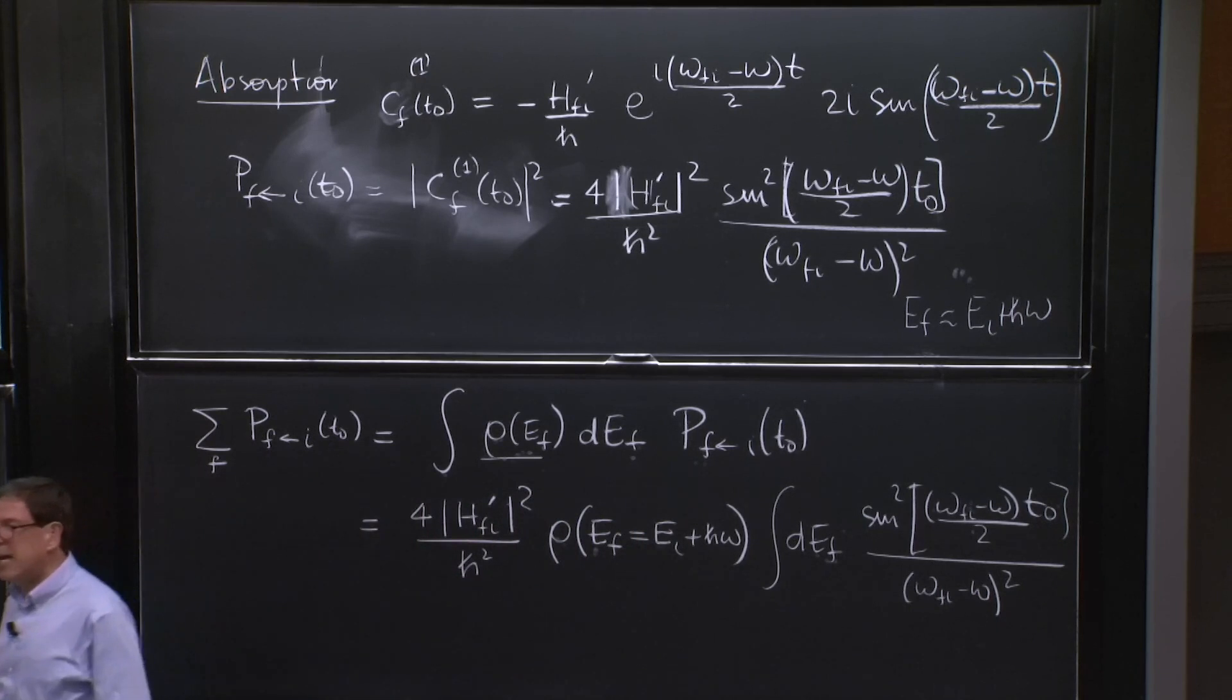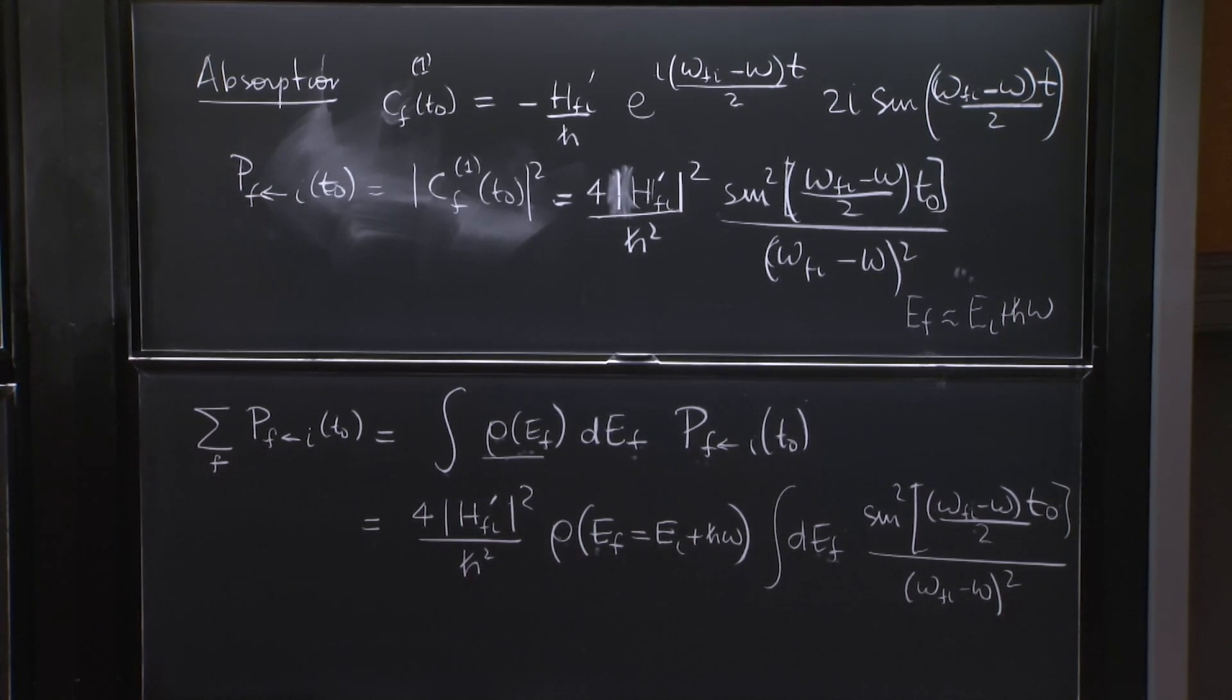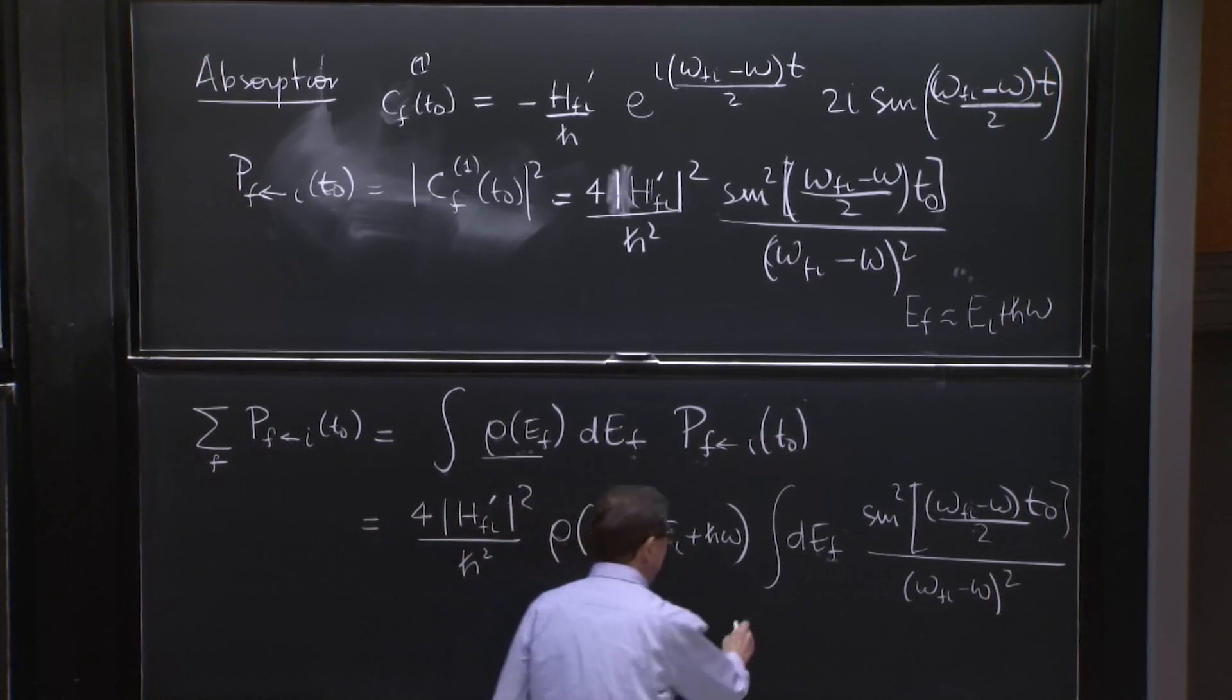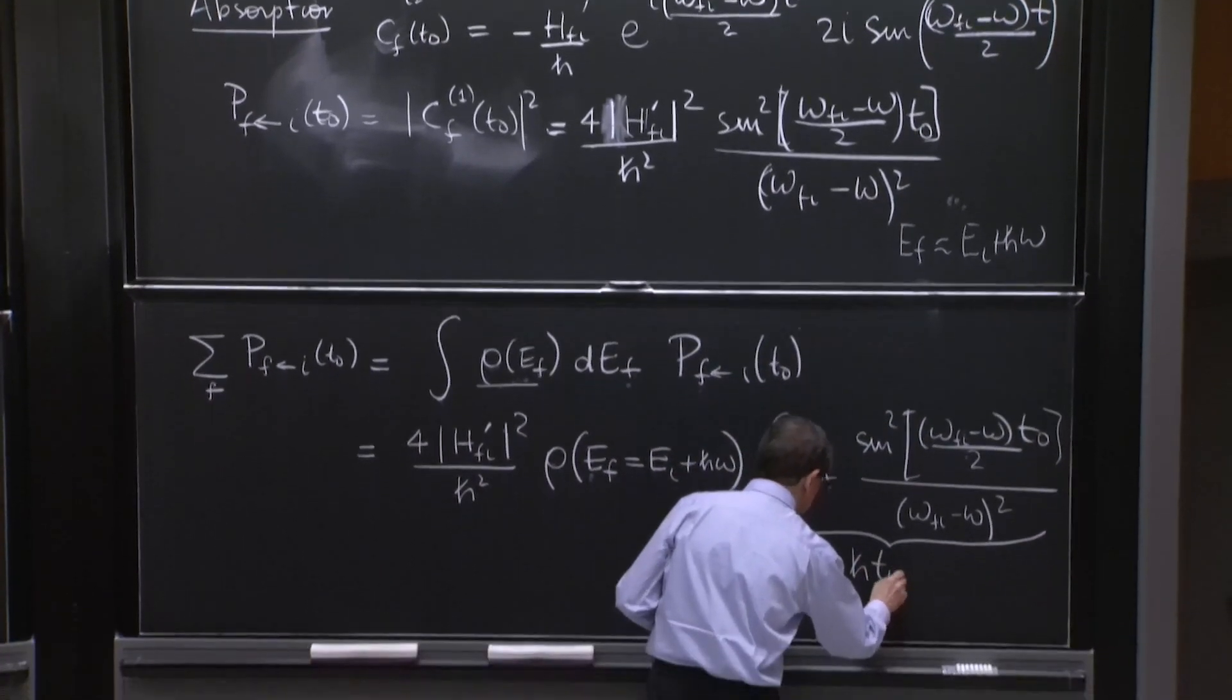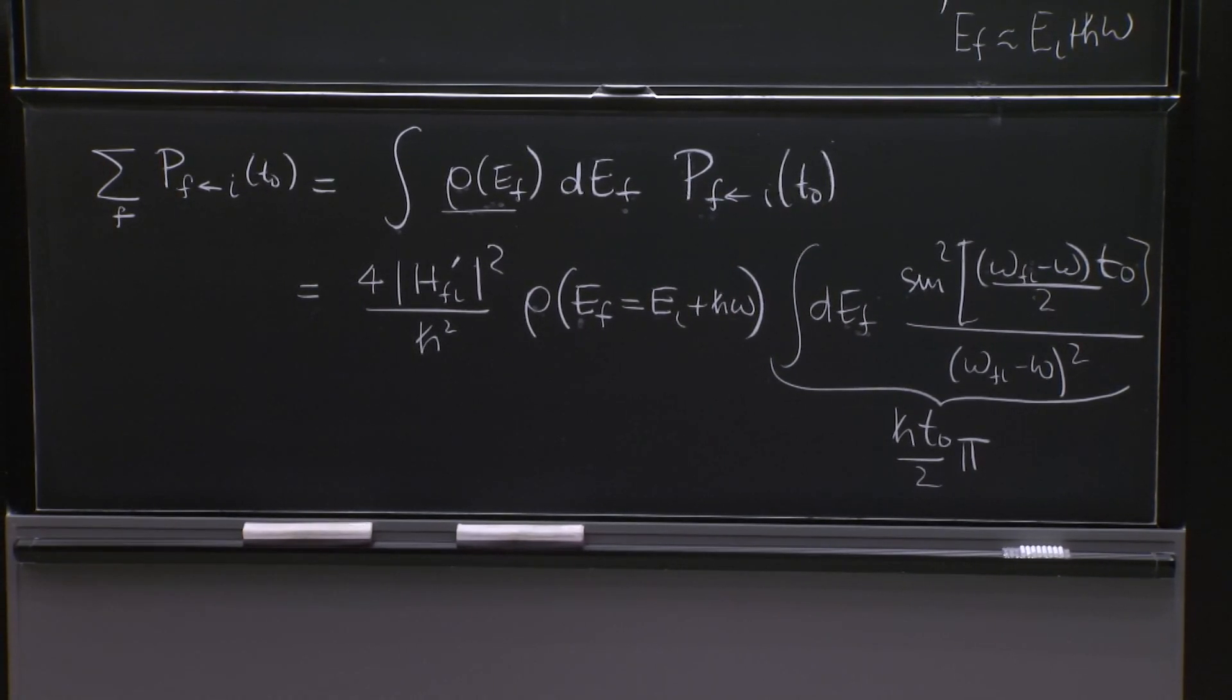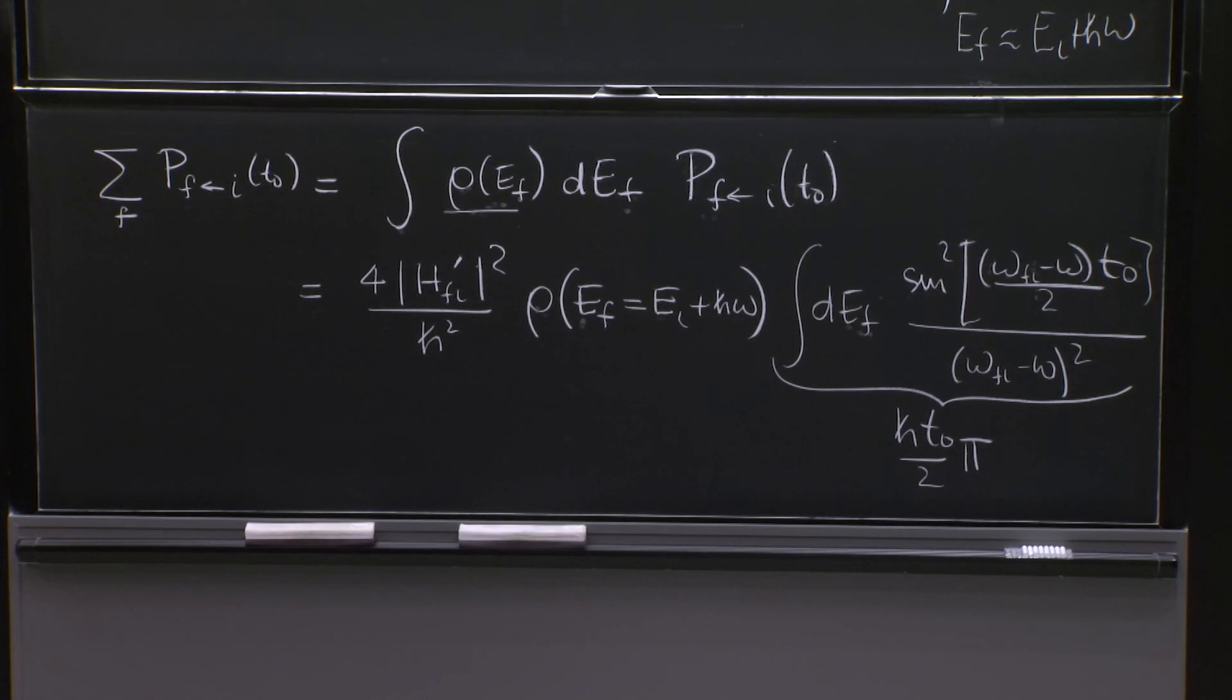And the lobes happen for values of Ef that are separated by some h bar divided by t naught. So this is the integral exactly the exact same integral we analyzed for the constant transitions. And it is the same integral that we argued that could be done as a sine squared x over x squared. So I will not do it again.